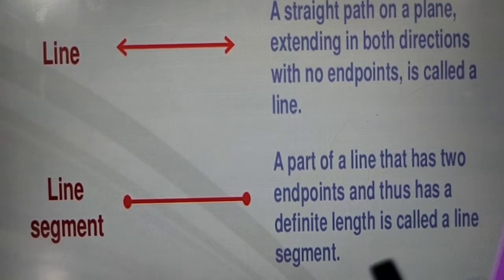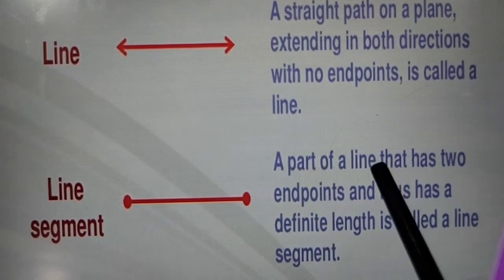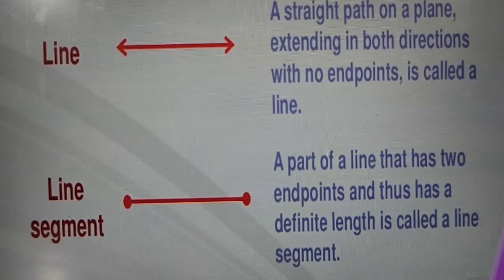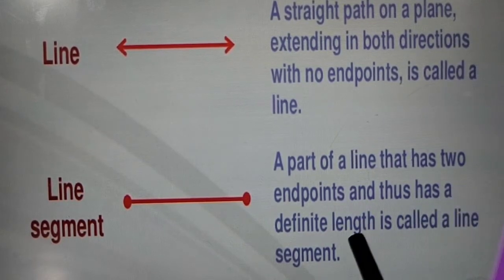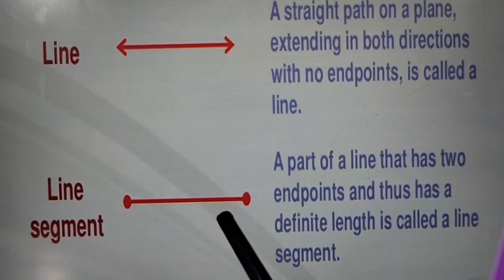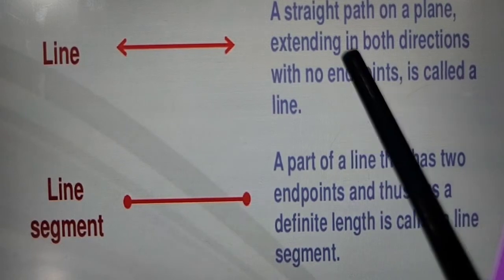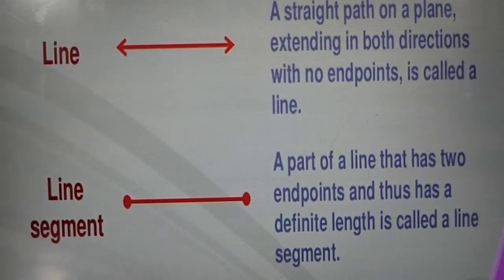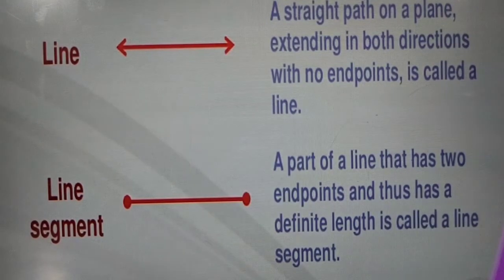Next, we have discussed line segment. The part of a line that has two end points and thus has a definite length is called a line segment. We can measure the length of a line segment but we cannot measure the length of a line because it is never ending in both the sides.